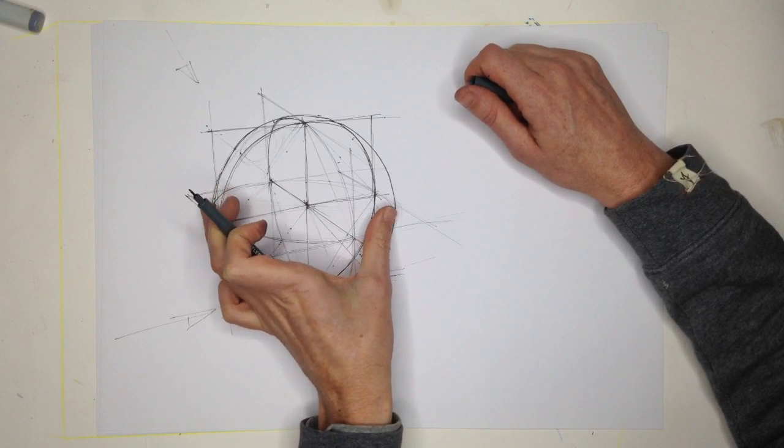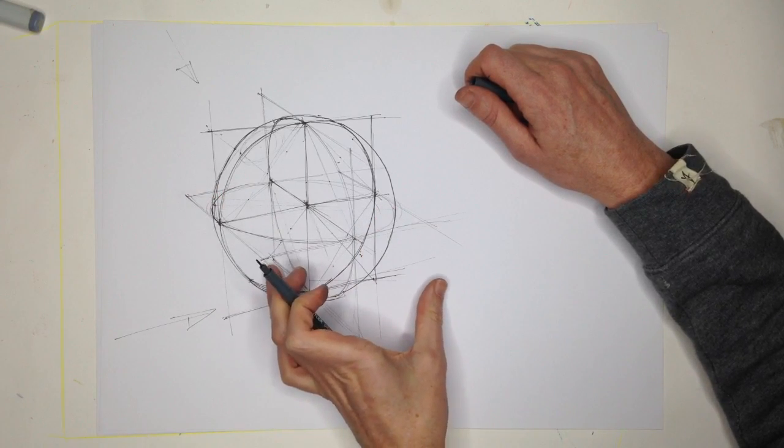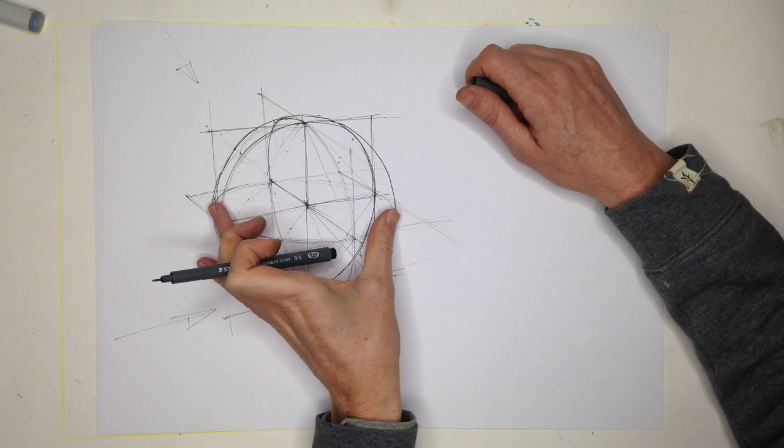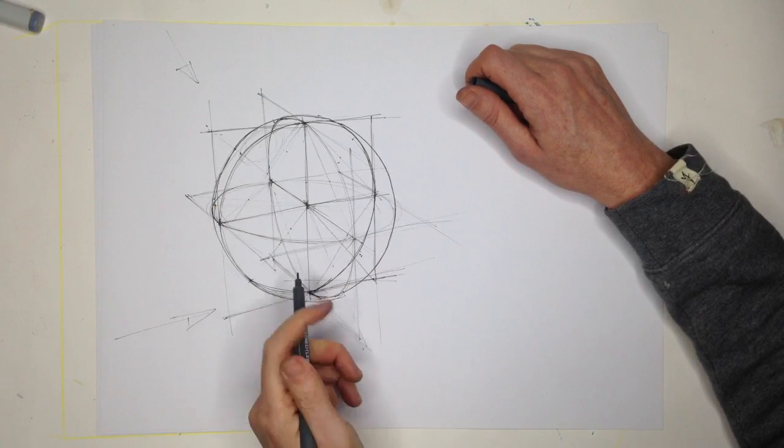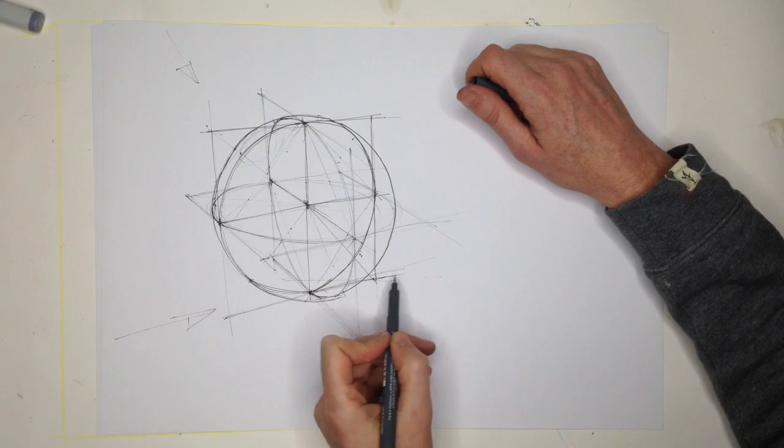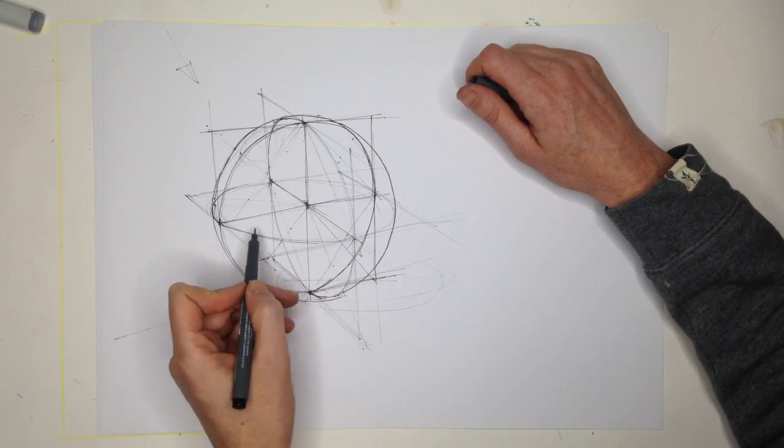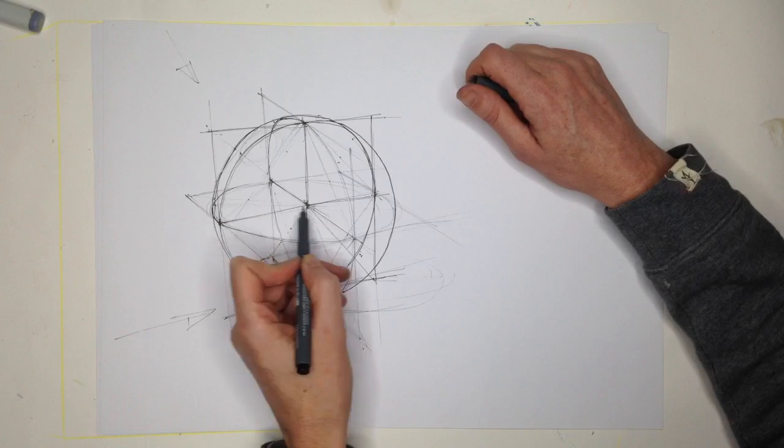Then I'm going to put this ellipse here on the ground, around the same width. You can see it's just going to be a little bit rounder than this one.